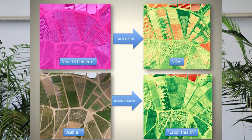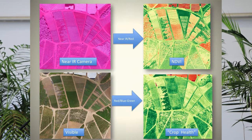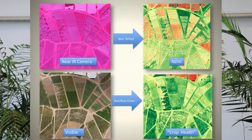This is the visible light view — what it looks like in regular red, green, and blue lighting. You can zoom into all of these images arbitrarily deeply, down to an inch per pixel resolution. This is the crop health view I showed earlier — a different false-color representation.